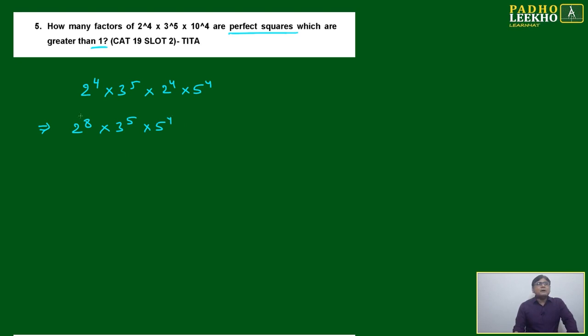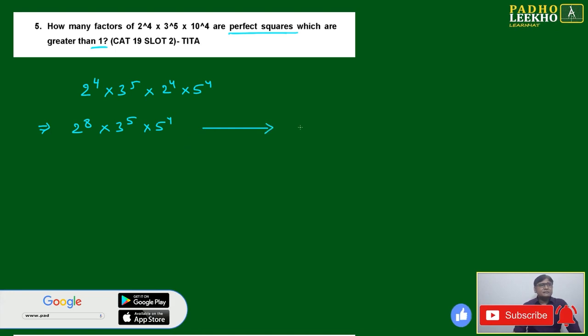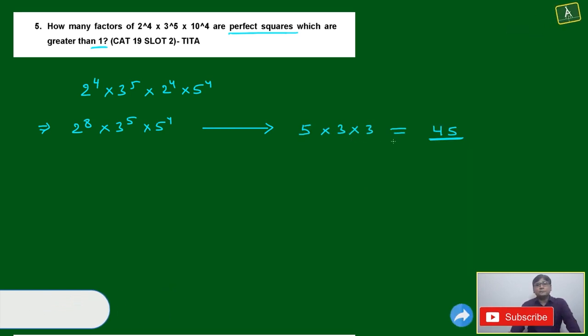Now this number we have to write in the form of perfect squares. How many ways? Directly we can say here 45 ways. Can we say? Did you understand why I have written 5 into 3 into 3?